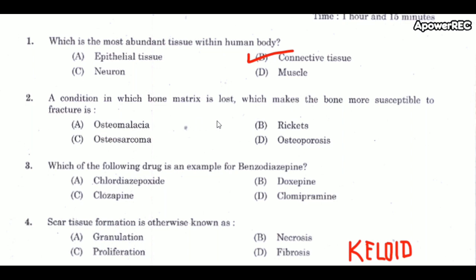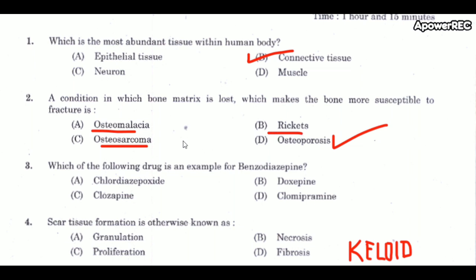Next question: a condition in which bone matrix is lost, which makes the bone more susceptible to fracture, is osteoporosis. Osteomalacia is a softening of bones caused by severe vitamin D deficiency. Osteosarcoma is the most common cancer of bones under the age of 25, usually found at the end of long bones, most commonly in male patients. Rickets is a skeletal disorder caused by lack of vitamin D, calcium, or phosphates.